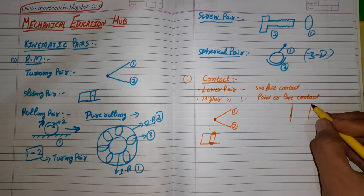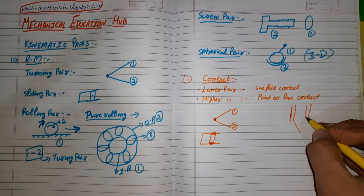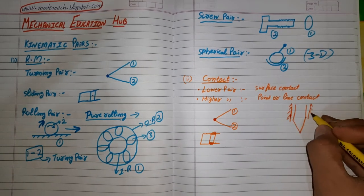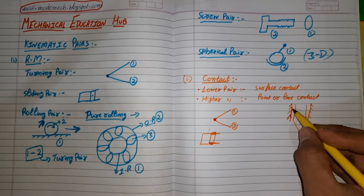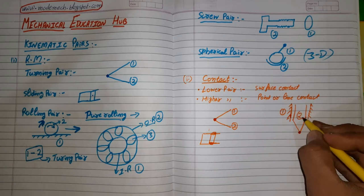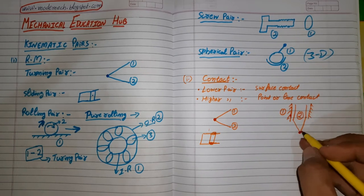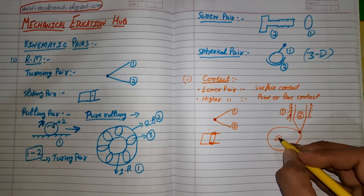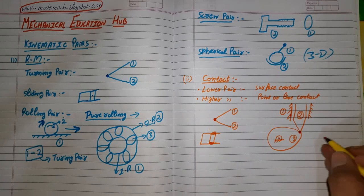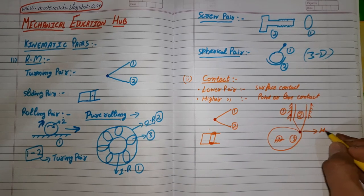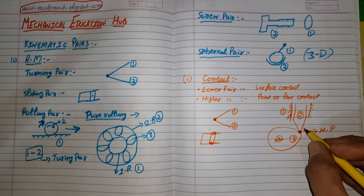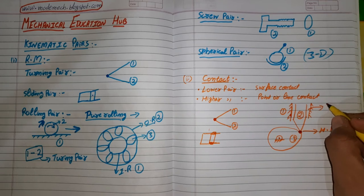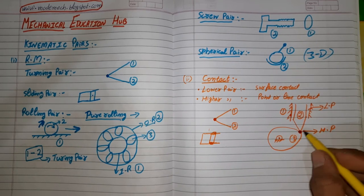For the higher pair, we have point or line contact. A cam and follower is a good example: consider a fixed link (link one), a reciprocating follower (link two), and an eccentric cam (link three) rotating around the fixed link. Here there is point contact between the cam and follower, forming a higher pair. The follower also slides against the fixed link, forming a lower pair there — so in the same example we have both a higher pair and a lower pair.